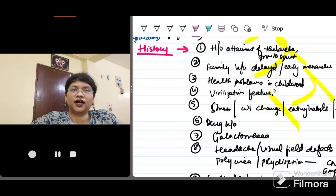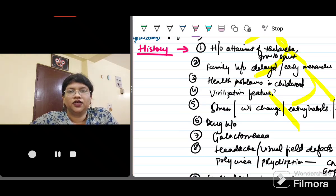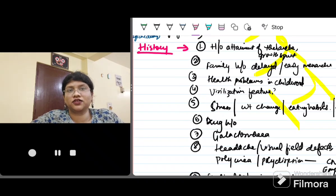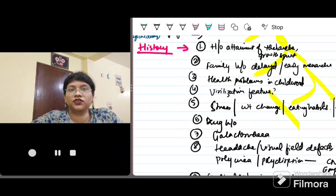Now there are some important history that you must ask the patient of amenorrhea. First is history of attainment of thelarche or when was the age when she got her growth spurt. This is important because presence of thelarche means the estrogen action is present. Next you should ask her the family history of any delayed or early menarche. From this we can know any constitutional delay of menses. Any health problems during childhood like CAH which is diagnosed in the early neonatal life.